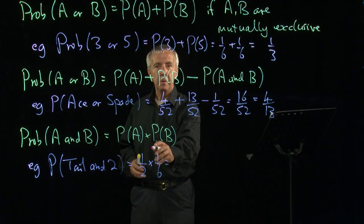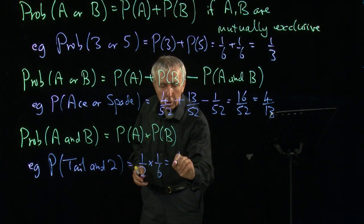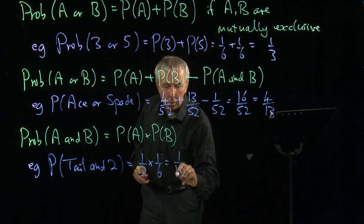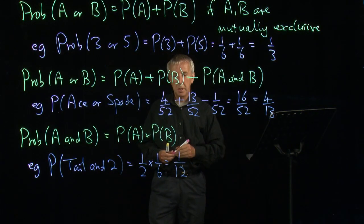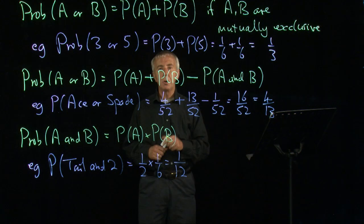multiplying fractions, very easy, multiply the tops, multiply the bottoms, and we get a 1/12. And it's worth remembering that whenever you combine events, the probability gets smaller.